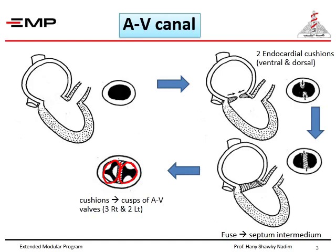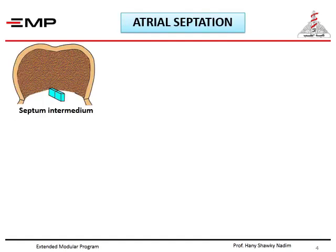Cells begin to proliferate from the margins of the AV canal to form cusps — three cusps on the tricuspid side and two cusps on the mitral side. So the first component of the inter-atrial septum is the formed septum intermedium in the AV canal.